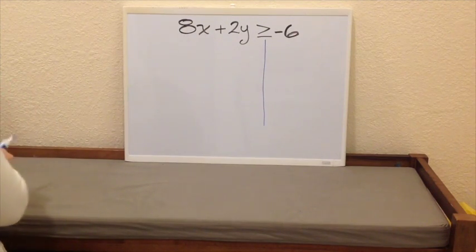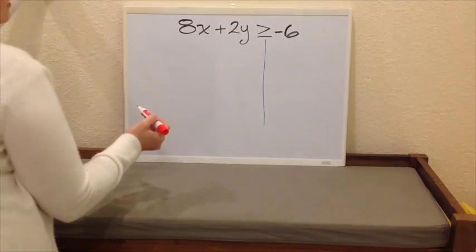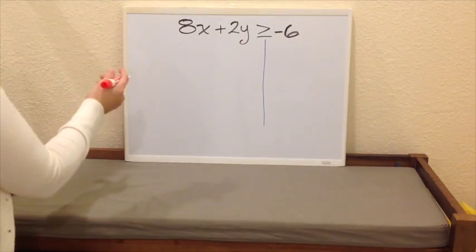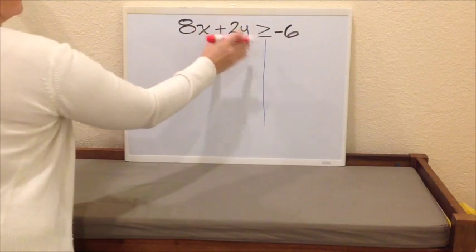So remember, we want to isolate the variable y. So the number that is with the y, in this case the 2, will have to be cancelled at last.